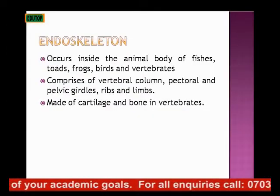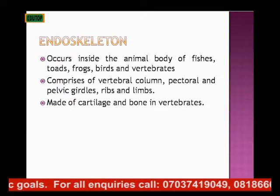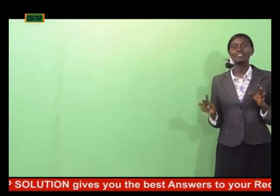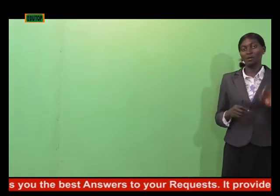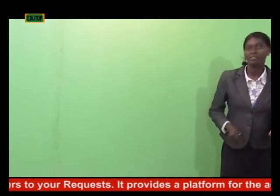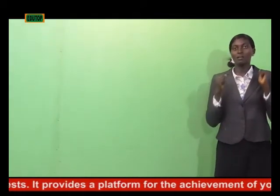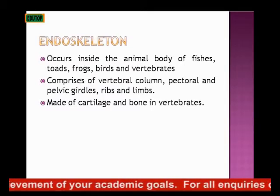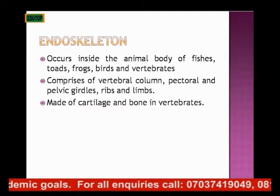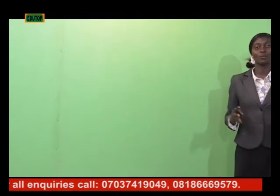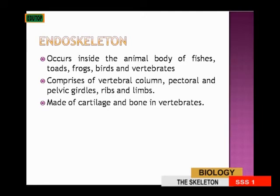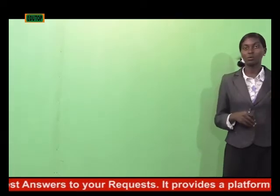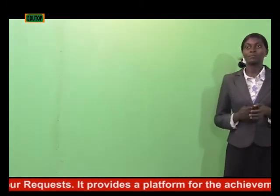The endoskeleton is the skeleton that occurs inside the animal body, as found in fishes, toads, frogs, birds, and vertebrates generally. When you eat fish, the flesh is on the outside and the bone is inside — that is the skeleton giving it shape and structure. The endoskeleton comprises the vertebral column, the pectoral and pelvic girdles, the ribs, and the limbs. In vertebrates, it is made up of cartilage and bone.